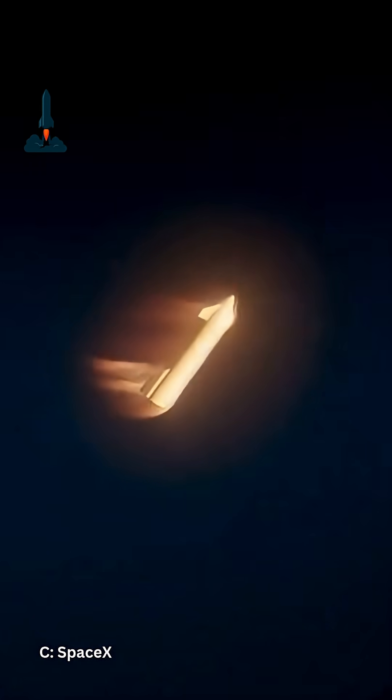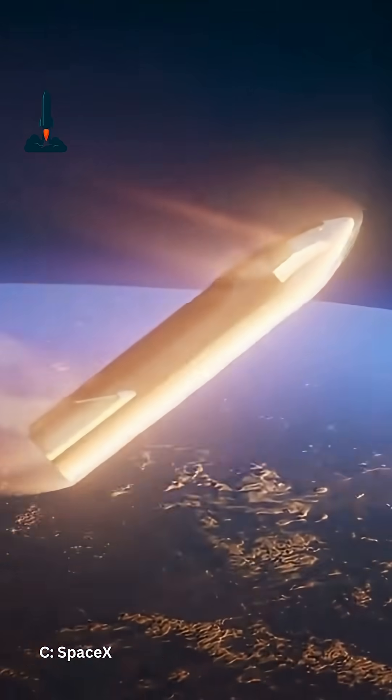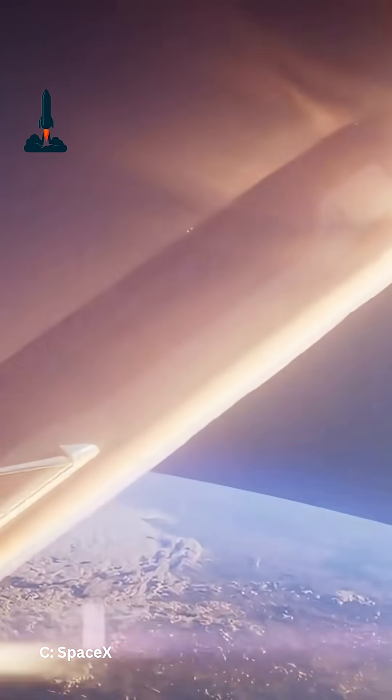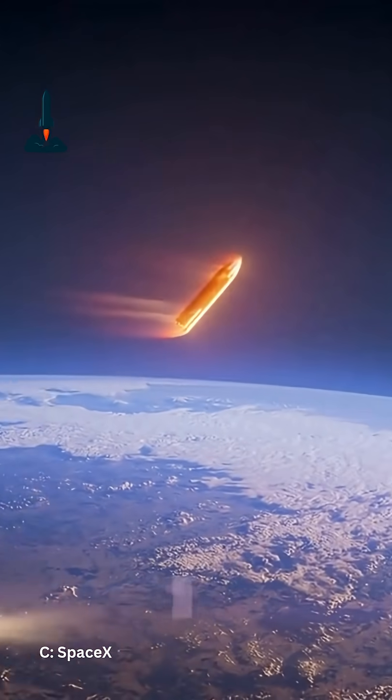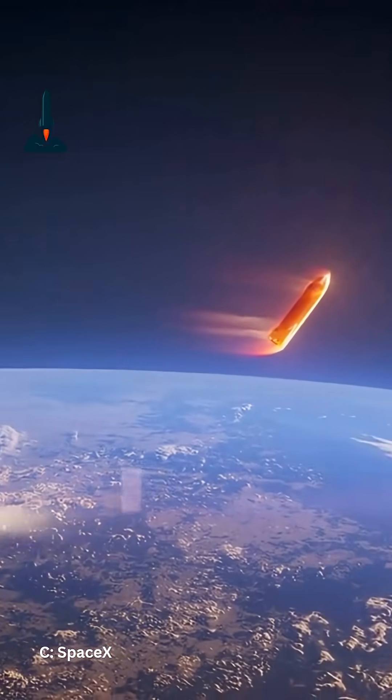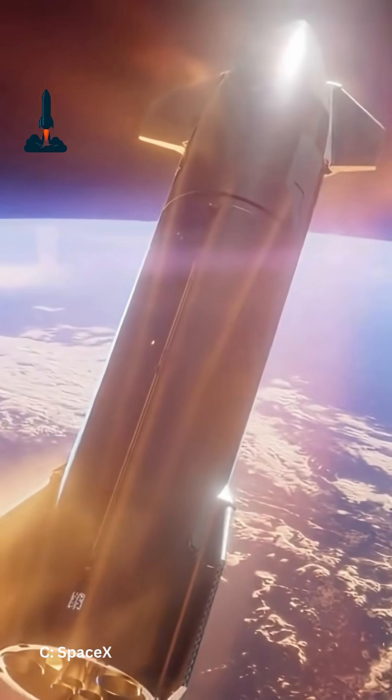What would happen if Starship's heat shield failed during reentry? When this giant rocket falls back to Earth, it's hitting the atmosphere at nearly 27,000 kilometers per hour. That's 22 times the speed of sound.